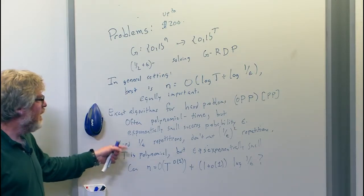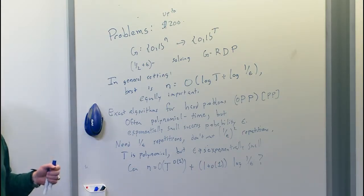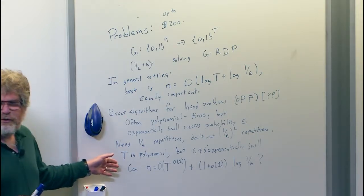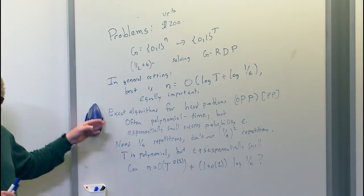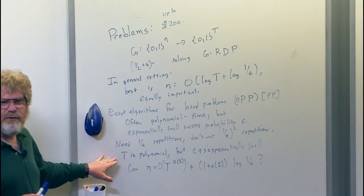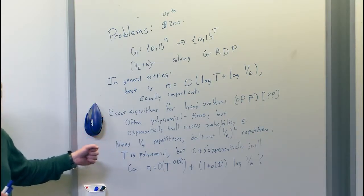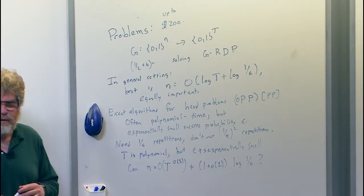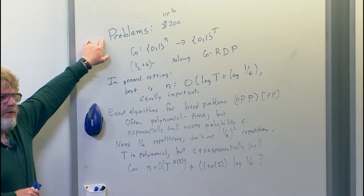If we had such a construction, I think that would successfully answer the question of whether we can derandomize this broad class of algorithms. Of course, we'll probably have to make some hardness assumption for some function somewhere to get started, since derandomization in general implies circuit lower bounds. So I'm asking: can we do this under any reasonable circuit complexity assumption? I'm putting a dollar amount of $200 on this problem.